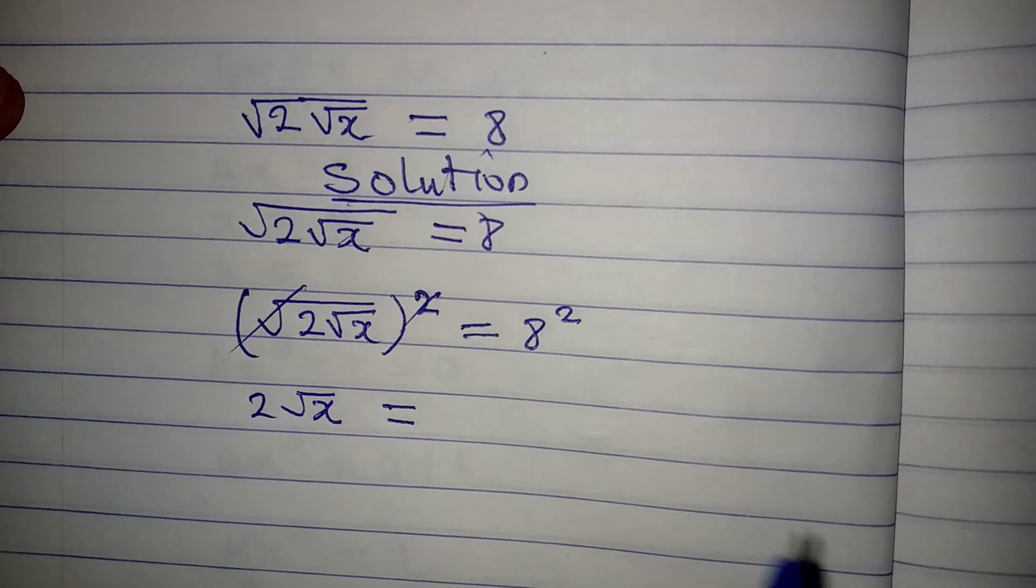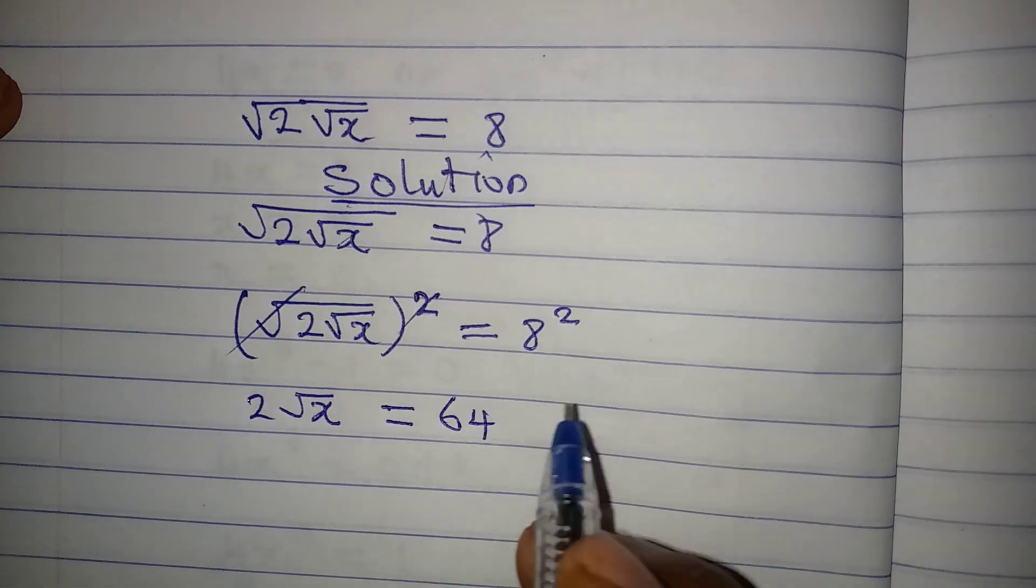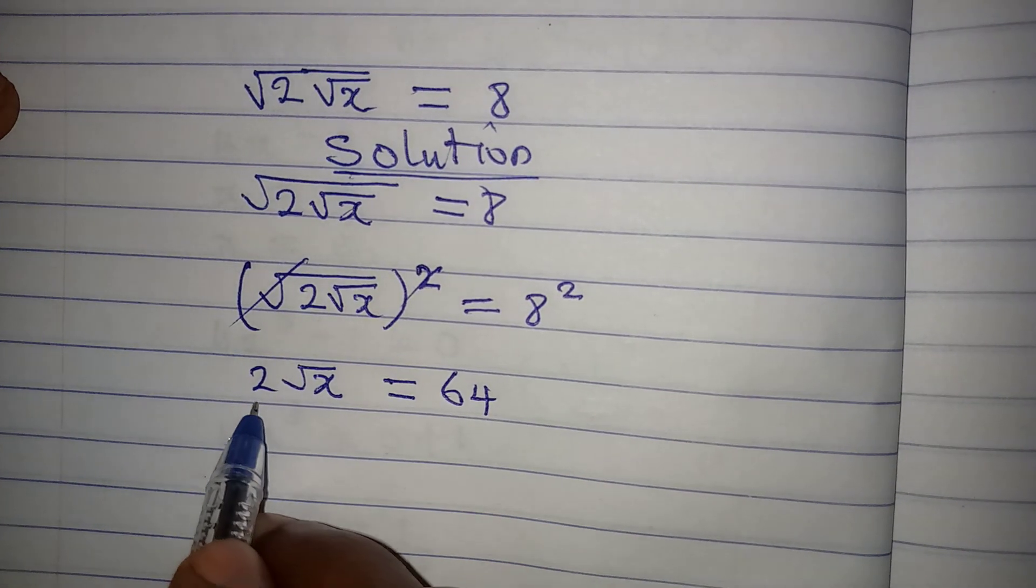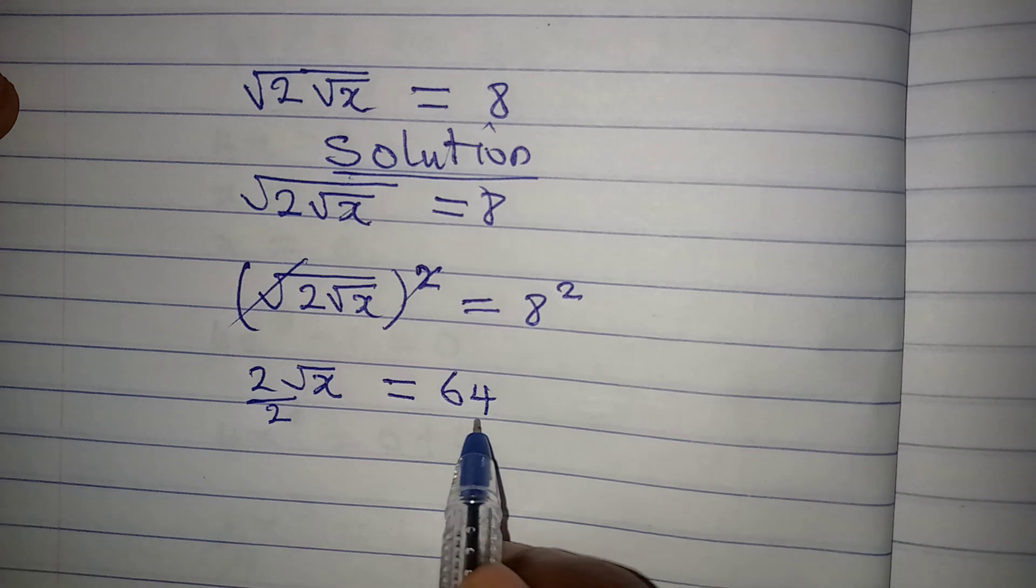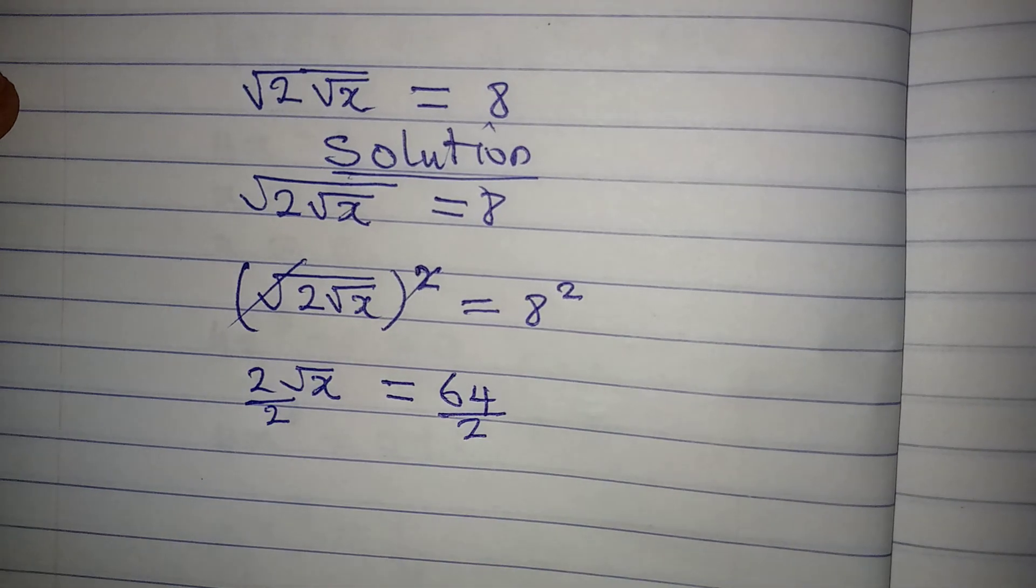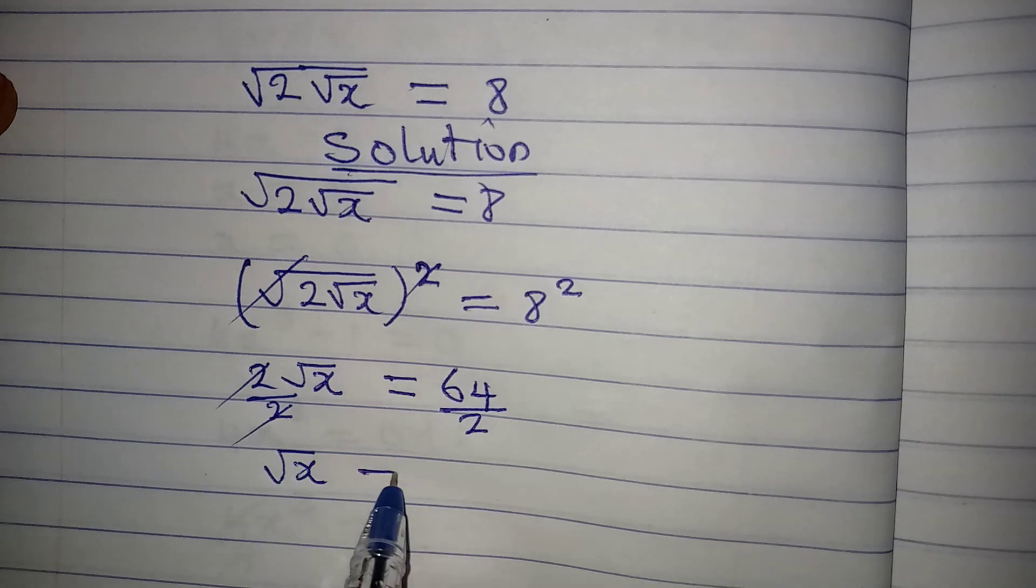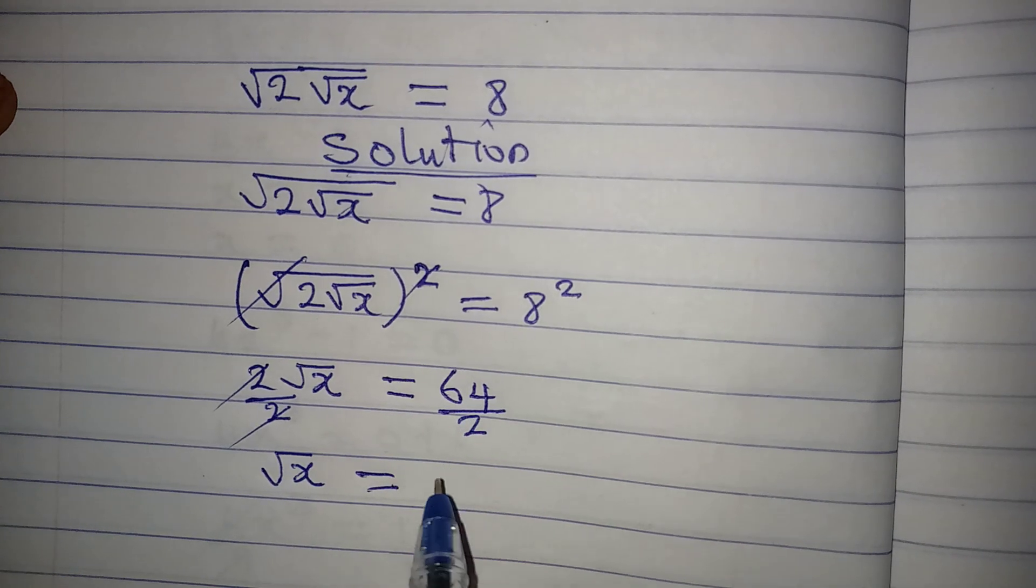What is 8 squared? That would be 64. But before doing anything, this can be divided by 2. Square root of x is now 64 divided by 2, and it is 32.